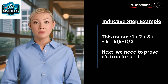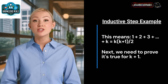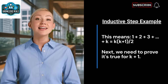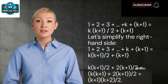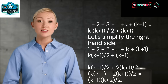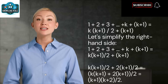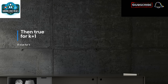Now, let's assume that the statement is true for some k. This means 1 + 2 + 3 + ... + k = k(k+1)/2. So we add k+1 to both sides of our assumption: 1 + 2 + 3 + ... + k + (k+1) = k(k+1)/2 + (k+1). Let's simplify the right-hand side: k(k+1)/2 + 2(k+1)/2 = [k(k+1) + 2(k+1)]/2 = (k+1)(k+2)/2. And there we have it! We've shown that if the statement is true for k, it's also true for k+1. All our dominoes fall!